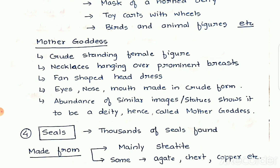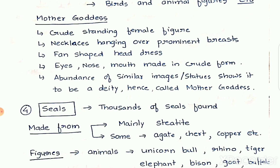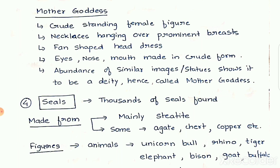The important example of terracotta is the mother goddess — a crude standing female figure with a beautiful necklace hanging over prominent breasts and a fan-shaped headdress. The eyes, nose and mouth are made in a crude form, not clearly similar to a human figure. The abundance of similar images and statues shows it to be a deity, and hence it was called the mother goddess.